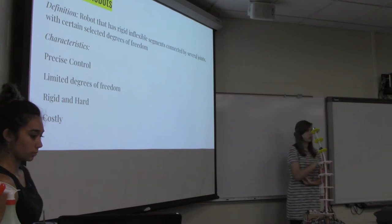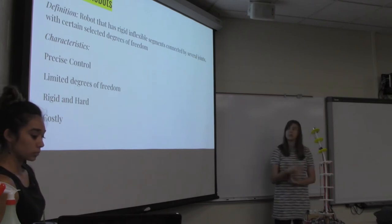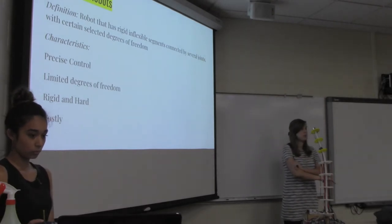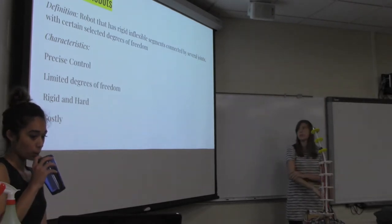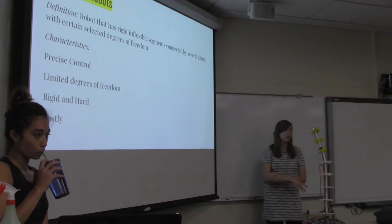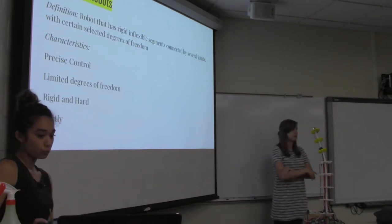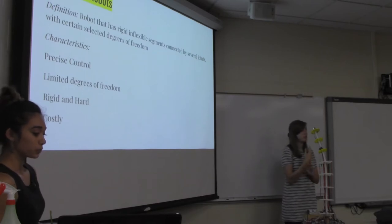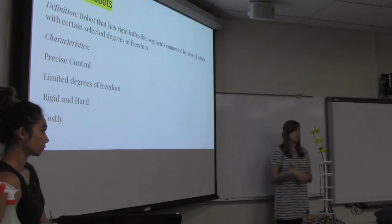So what is a rigid-link robot? A rigid-link robot has rigid and flexible segments, which are connected by joints, which is where your actuation comes from. The number of joints is your number of degrees of freedom. They have precise control, but since they're limited, they have limited degrees of freedom. They're rigid and hard, so if they run into someone, it can cause injury, and then they can be very costly with all the sensors that are needed and controls to help them be safe around humans.